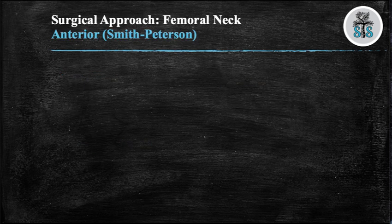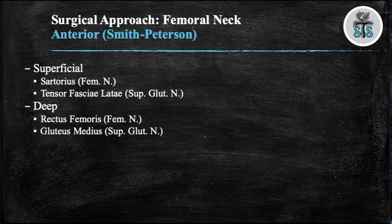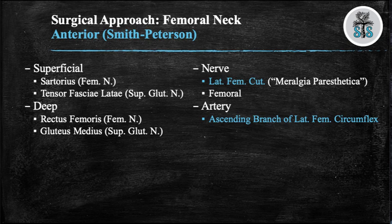We will now cover the different surgical approaches. First, the Smith-Peterson, also known as the anterior approach. The superficial dissection is between the sartorius and the tensor fasciae latae; the deep surgical dissection is between the rectus femoris and the gluteus medius. The nerves at risk are the lateral femoral cutaneous and the femoral nerve. If a neuropraxia occurs to the lateral femoral cutaneous nerve, the patient will classically describe numbness, burning, and pain over the lateral thigh. The artery that needs to be cauterized is the ascending branch of the lateral femoral circumflex artery.